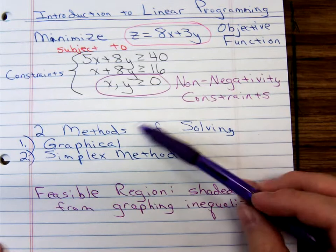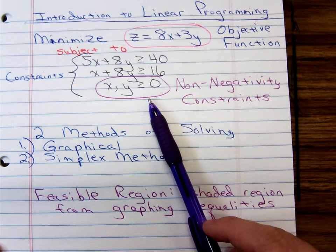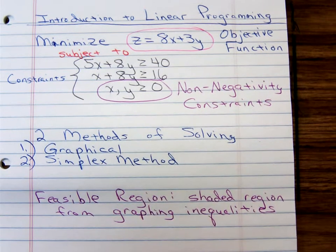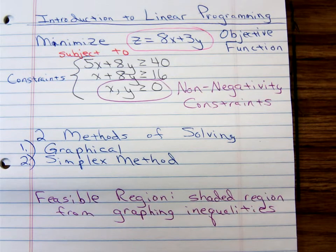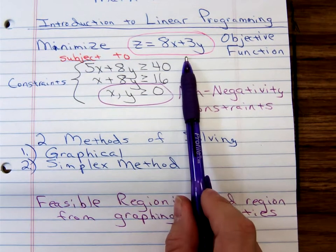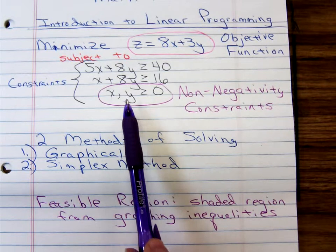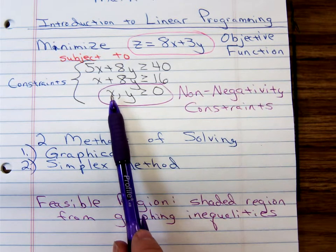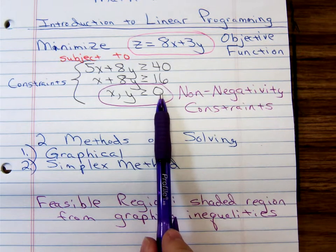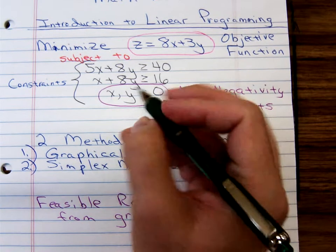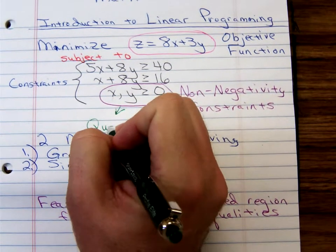I actually solve this exact linear programming problem in another video, so there's a video that starts off with z equals 8x plus 3y with those constraints. To recap the terminology: the function you're trying to maximize or minimize is called the objective function, the inequalities are called constraints, and the non-negativity constraints mean you're only looking at the region where x ≥ 0 and y ≥ 0 — that's quadrant one on an x-y grid.